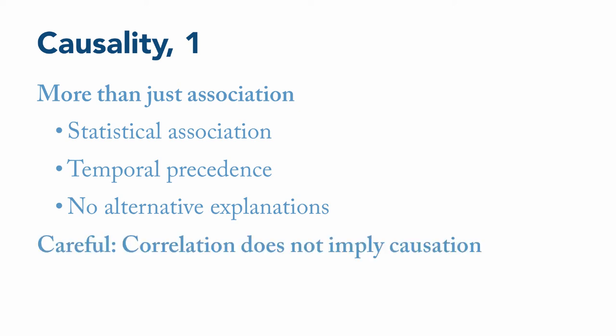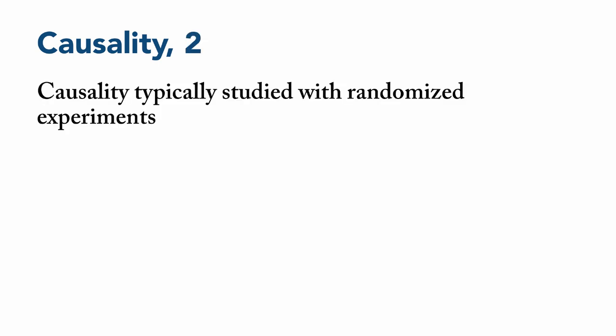In the research world, if you really need to know what causes what, then the most common approach is to conduct a randomized experiment. What this means is a controlled situation with, first, standardized conditions. So you make as many things similar as possible for all of your participants, so there are very few possible alternative explanations available.